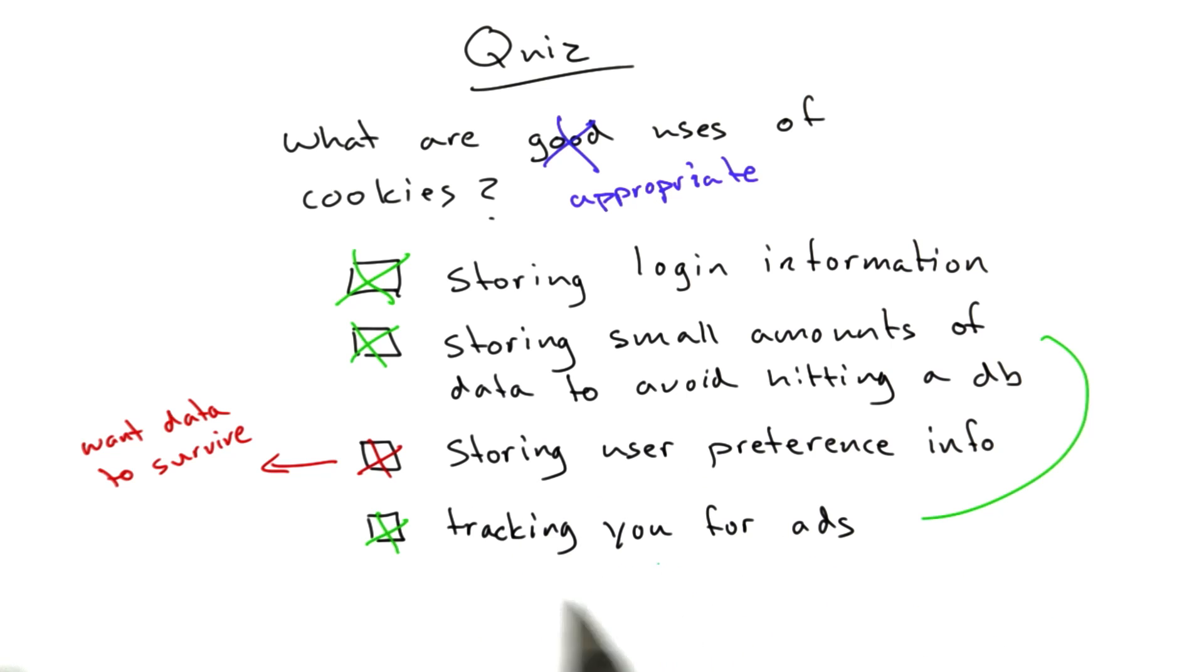Cookies, and we'll come back to a little bit how ad networks work. I think it's interesting to understand. But cookies are a critical technology for tracking you for advertising purposes.